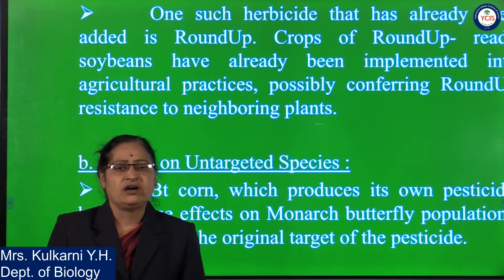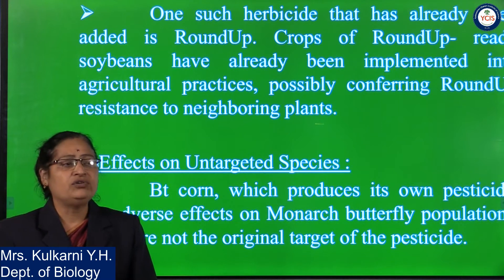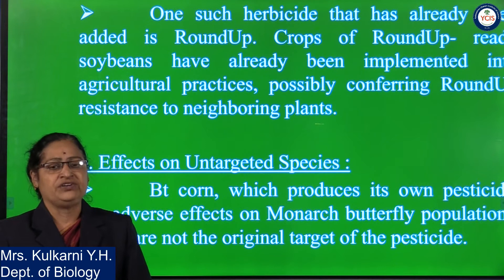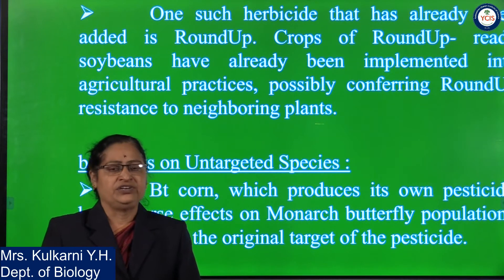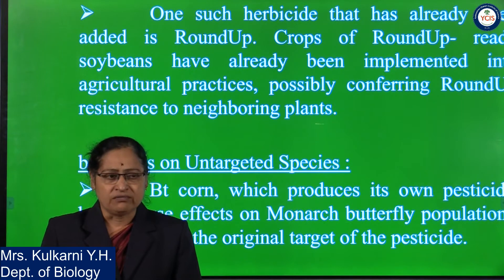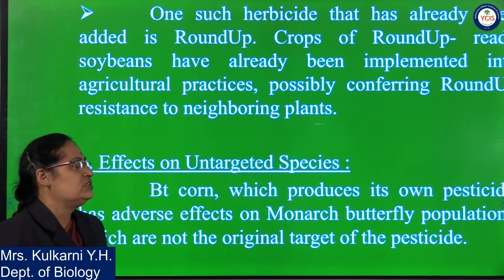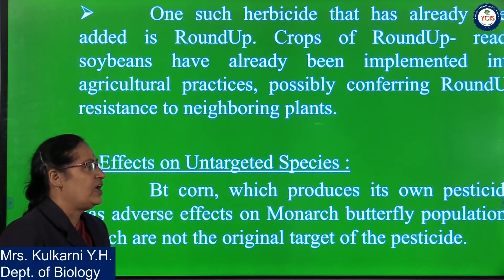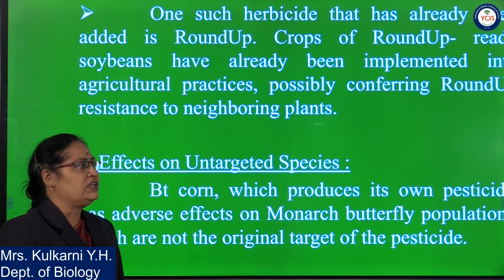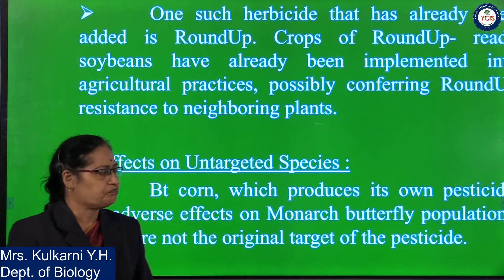One such herbicide that has been used is in the Roundup ready variety. These Roundup ready varieties include soya bean, alfalfa, wheat, and canola. These varieties are resistant to weed plants. These Roundup ready crops, such as soya bean, have already been implemented in agricultural practices, and these plants are Roundup resistant to neighboring plants.